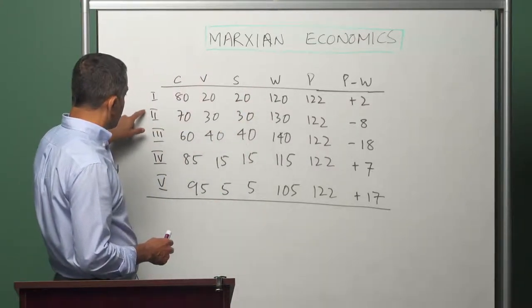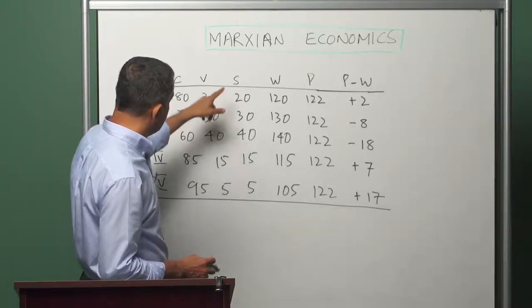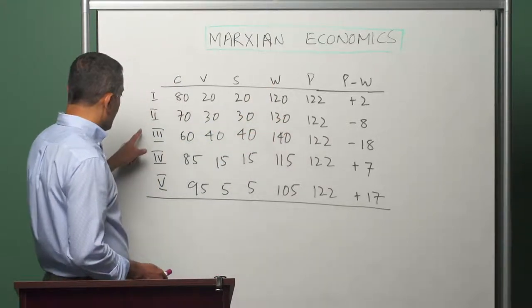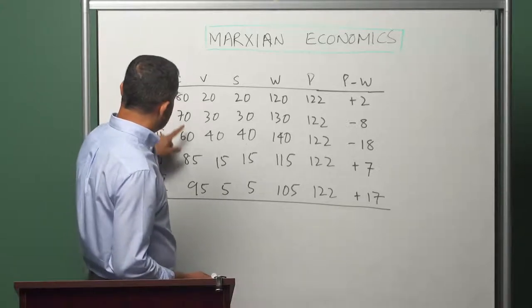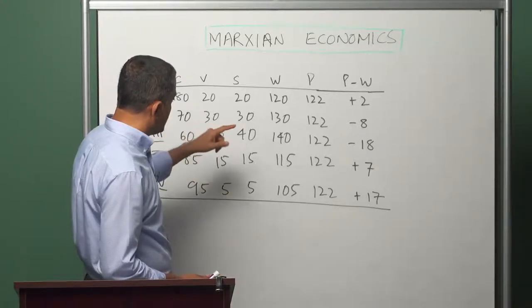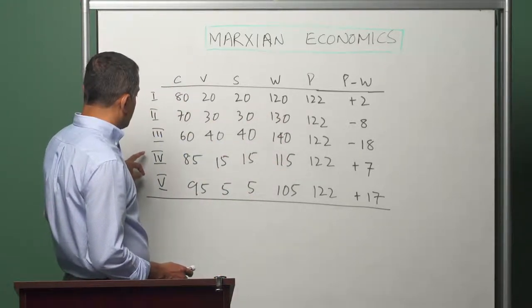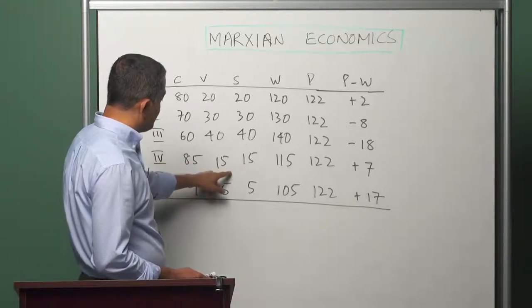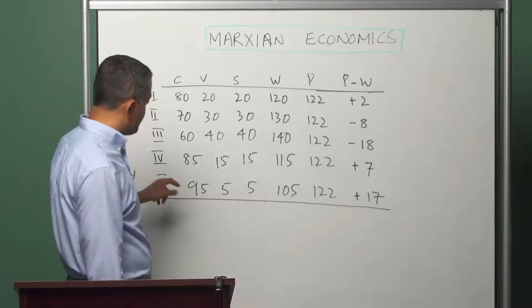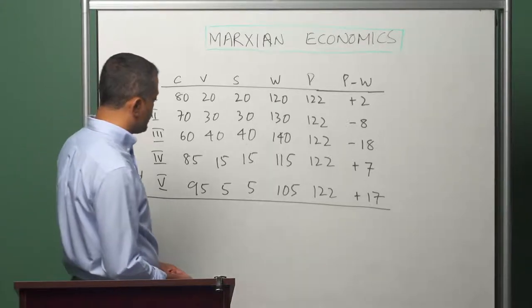Similarly, sector 2 has 70 and 30 as constant and variable capital, surplus value is 30, so the value is 130. Sector 3 has 60 and 40 as constant and variable capital, therefore the total output value is 140. Sector 4 has 85 and 15, therefore the value of the output is 115, and sector 5 has 95 and 5, therefore the value of the output is 105.